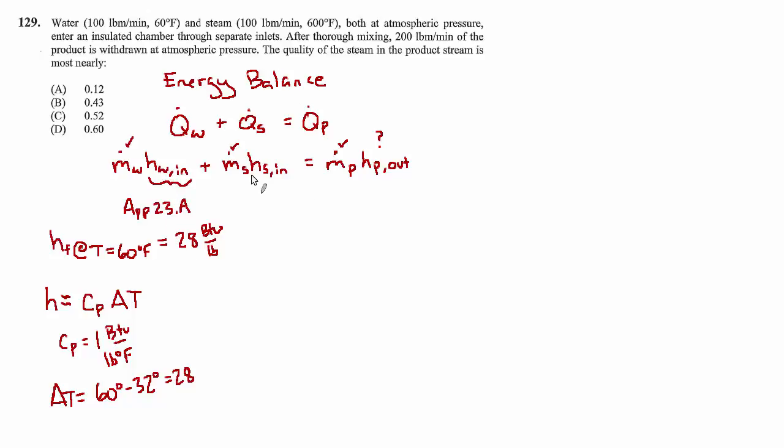Then for the enthalpy of steam, we're going to use Appendix 23C, which is the superheated steam table. We know that we have a temperature of 600°F and a pressure that's atmospheric, so 14.7 psi. Given those two facts, we can look up in the table and find the enthalpy: it's 1335.3 BTU per pound.